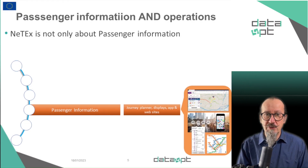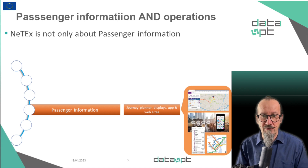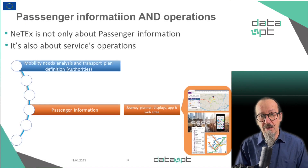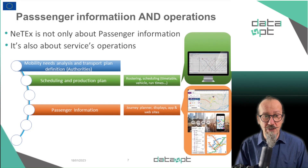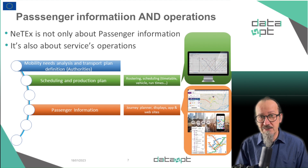Mobility systems are not only about passenger information — it's only the visible part of the iceberg. A lot of other systems are involved. A transport plan system has to be described and mobility needs have to be analyzed first, and this information will be transmitted to a scheduling system which is going to organize the public transport service, basically assigning the vehicle, assigning the drivers, etc.